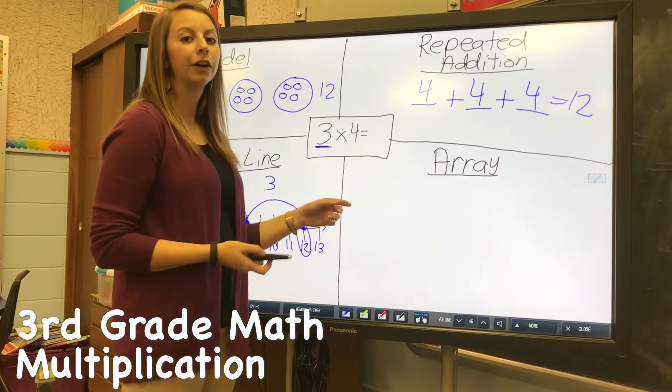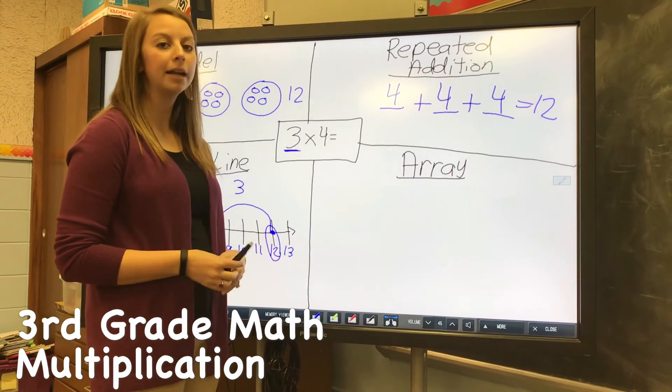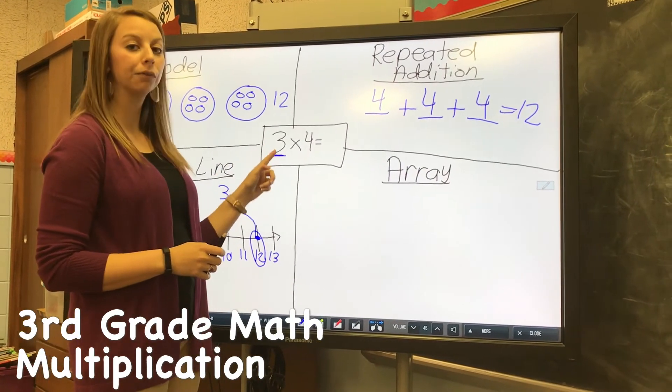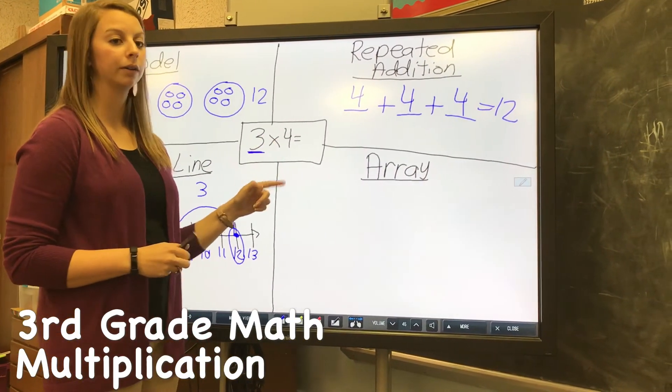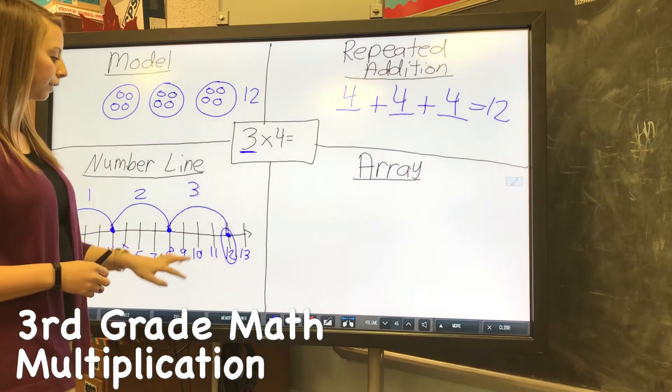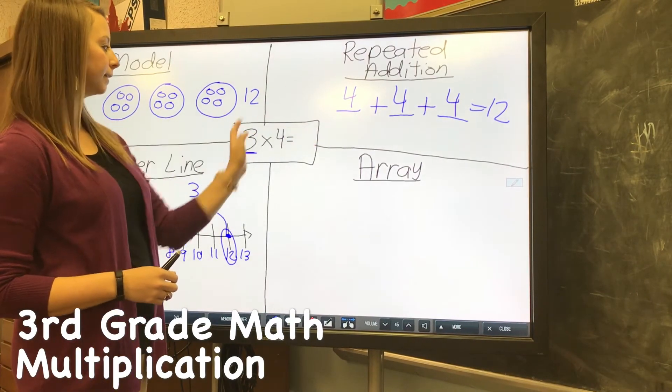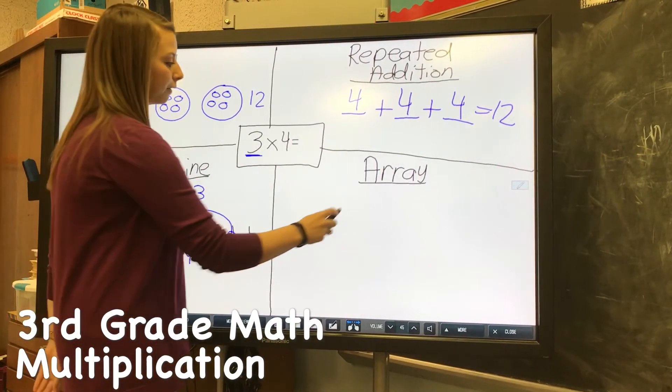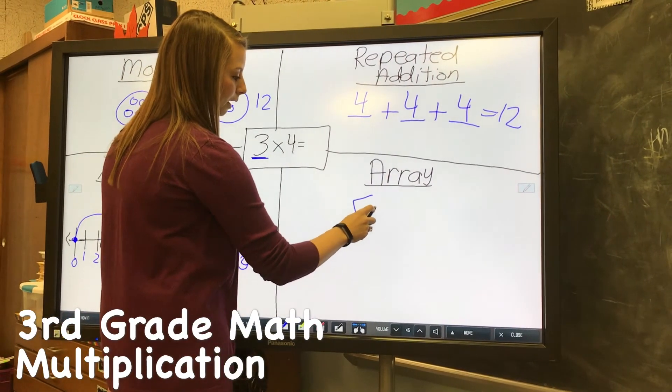The last strategy is an array. With arrays we would do three rows of four. So here we did three groups, three jumps, three spaces, and now we're going to do three rows. If I draw three rows going this way: one, two, three.